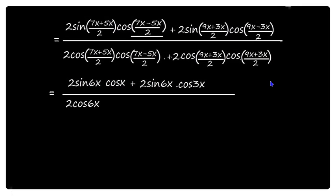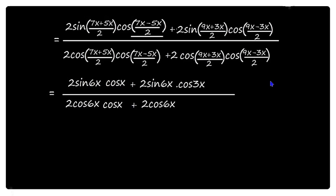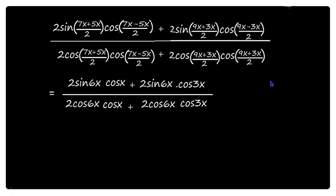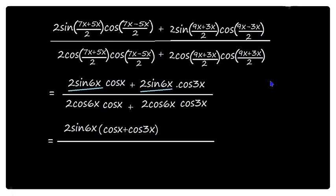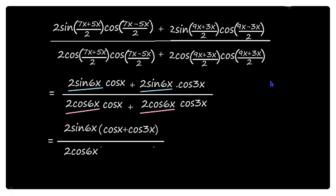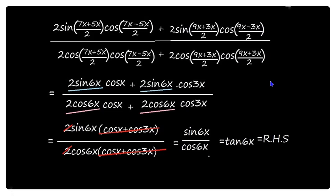Taking 2 sin 6x common in the numerator leaves (cos x plus cos 3x). Taking 2 cos 6x common in the denominator leaves (cos x plus cos 3x). The factor (cos x plus cos 3x) cancels, and the 2s cancel, leaving sin 6x divided by cos 6x, which equals tan 6x, the right hand side.